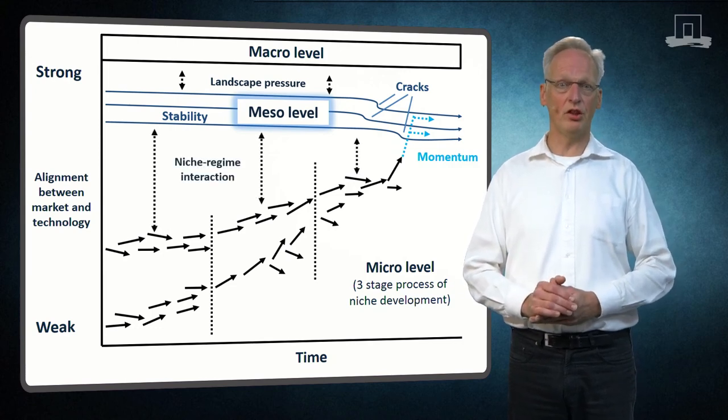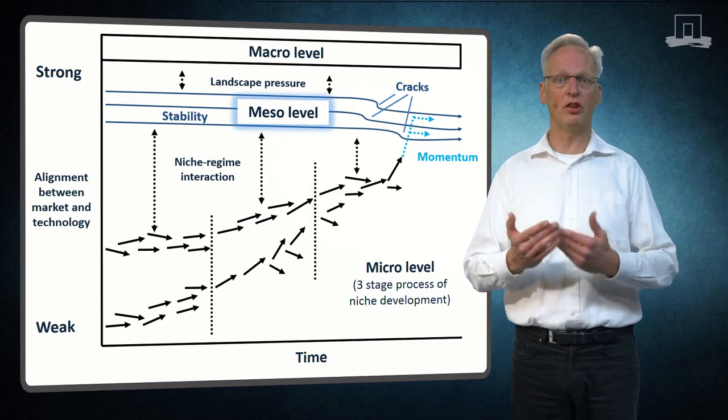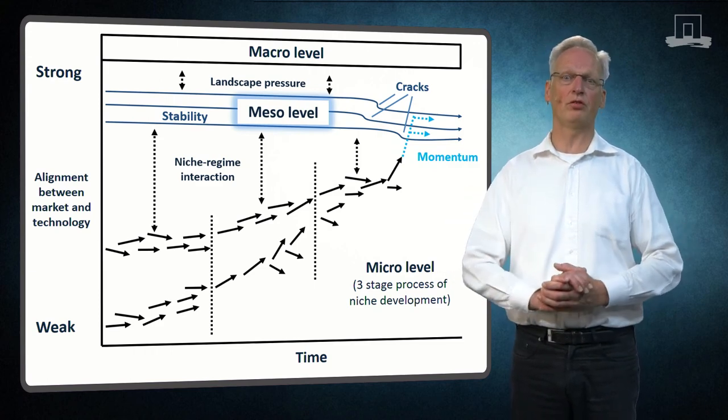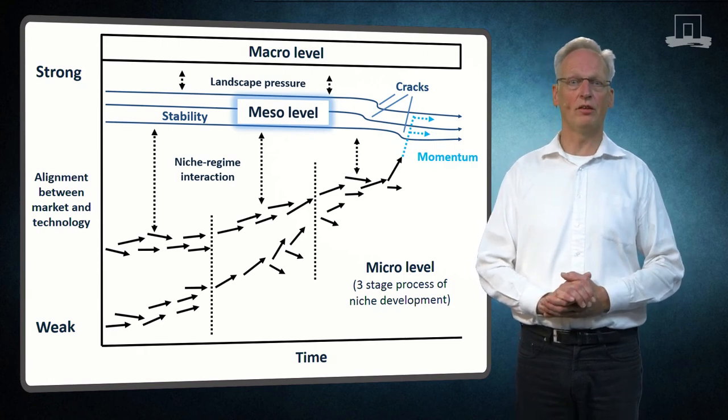The interaction between niches and established regimes is critical for the succession of regimes or the integration of new niches into established regimes. Thus, new technologies get diffused.